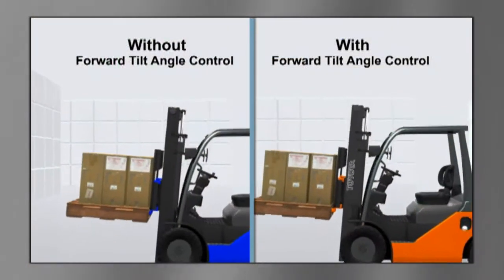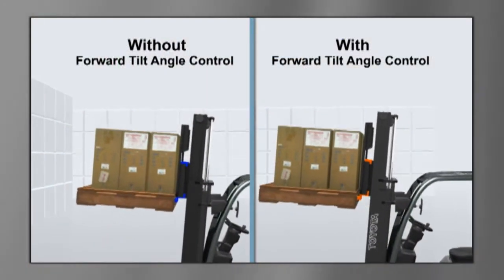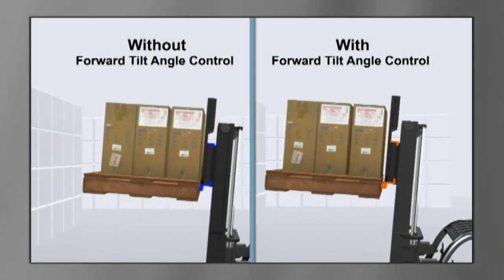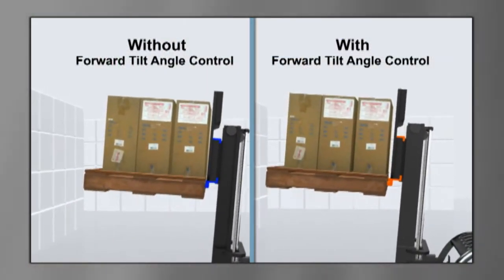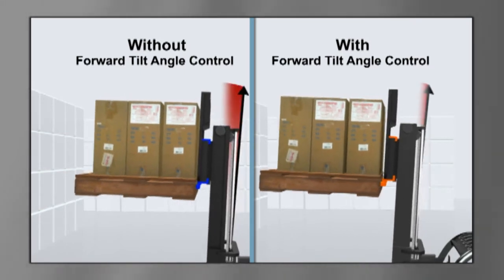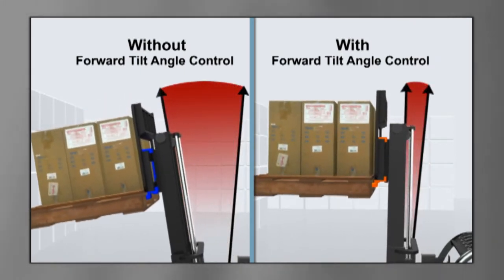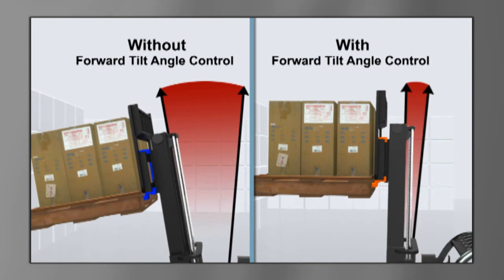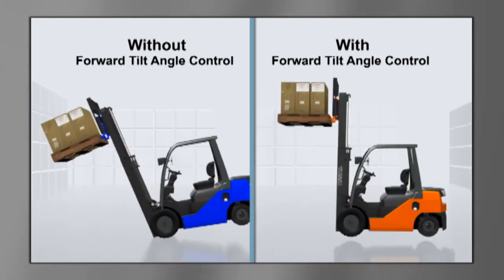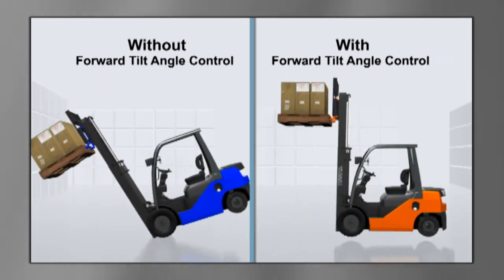Toyota's forward tilt angle control senses load weight and mast height, then automatically overrides the operator's manual control and limits forward tilt to decrease the chance of spilling a load or tipping the lift truck forward.